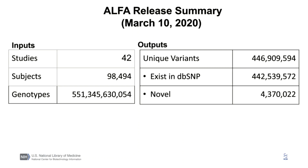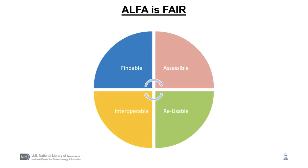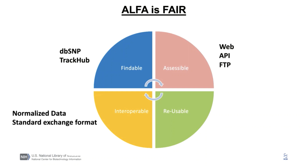The second release will be coming out soon with double the numbers of studies, subjects, and genotypes. Alpha data are provided as open access following the FAIR data principles. Data is findable for both humans and computers through NCBI resources including dbSNP and TrackHub, and soon ClinVar. Data is accessible through the web, API, and FTP download. The data is normalized and provided in a standard exchangeable format for interoperability, and is also integrated with dbSNP release and can be reused by existing pipelines that use dbSNP.